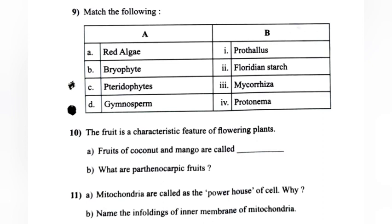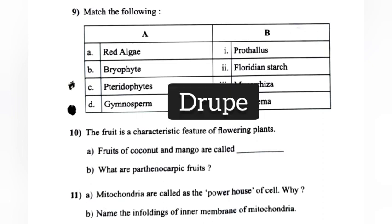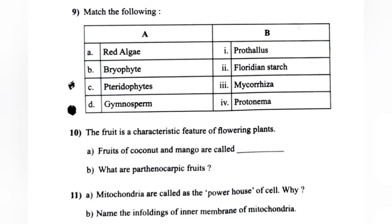Question 10: The fruit is a characteristic feature of flowering plants. (A) Fruit of coconut and mango are called ___. Answer: Drupe. (B) What are parthenocarpic fruits? Answer: A fruit formed without fertilization of the ovary is called a parthenocarpic fruit.